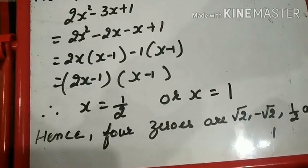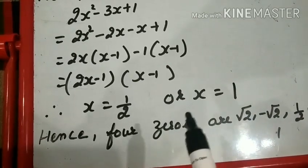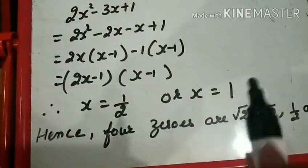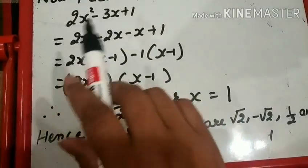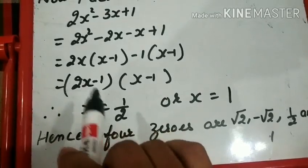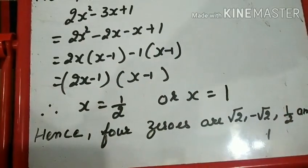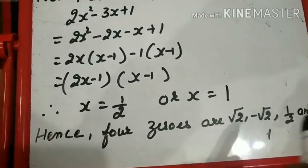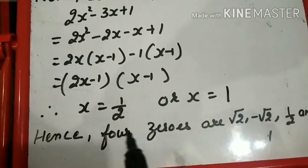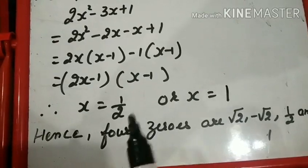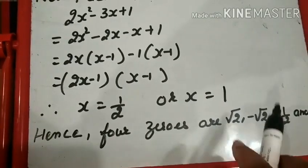Hence the 4 zeros are: the two already given — √2 and -√2 — and the two we found: 1/2 and 1. Let us do a quick recapitulation. First, from the two given zeros we formed factors and then a quadratic factor. Second, we divided p(x) by that factor to get a quotient in quadratic form. Third, we factorized the quotient to get the remaining two zeros. Note: always write all four zeros, as the question says 'find all zeros.'